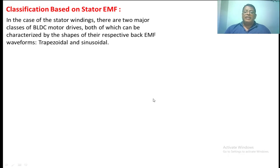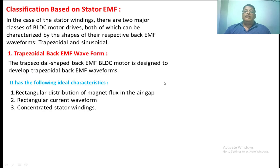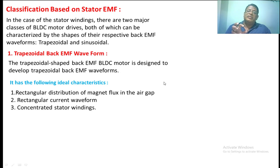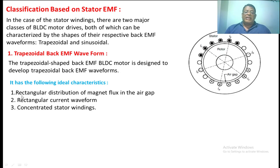The next classification is based upon the stator EMF. There are two types of BLDC motors: one is the trapezoidal and another is the sinusoidal. If the back EMF — the induced voltage in the stator winding — is trapezoidal, then it is a trapezoidal BLDC motor. To induce a trapezoidal voltage in the stator winding, the motor must have rectangular redistribution of magnetic flux in the air gap, rectangular current waveform, and concentrated stator winding.